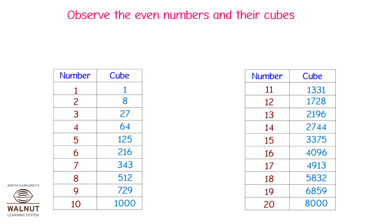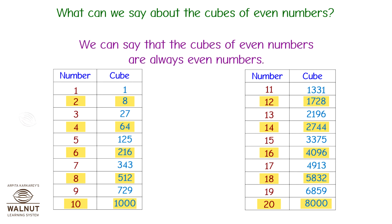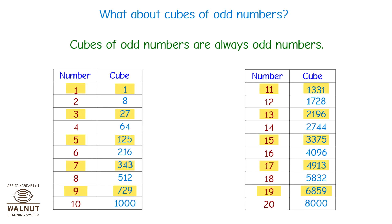Observe the ending digits of these numbers. Which digits do you see? We can say that the cubes of even numbers are always even numbers. Cubes of odd numbers are always odd numbers.